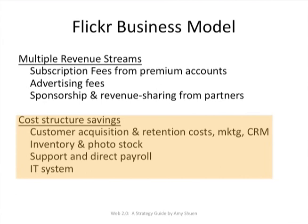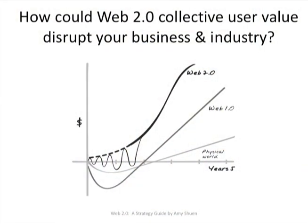So all of these things saved them a lot of costs. In this final slide, we ask the question: how could Web 2.0 collective user value disrupt your business and industry? Take a look at that diagram again and think about the ways in which a competitor or you as a leader in your industry or company could make use of collective user value.